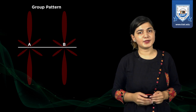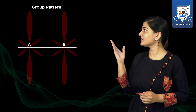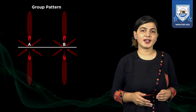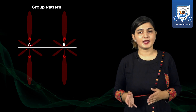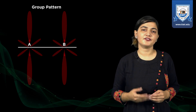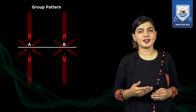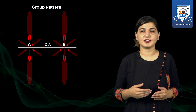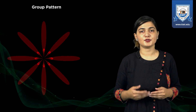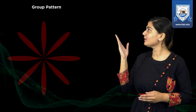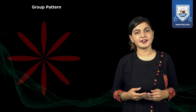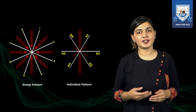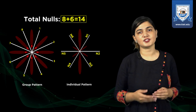Group A and group B are two lambda distance apart, and there is no phase difference between them. The radiation pattern of two antennas which are two lambda distance apart and having zero phase between them — as derived in a previous video — has eight nulls. Applying the property of pattern multiplication, the total nulls in the output radiation pattern would be 8 + 6 = 14.